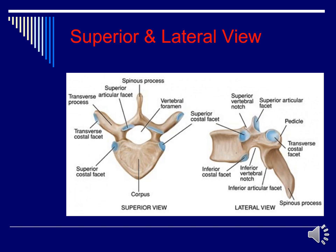This is a superior view and a lateral view of the typical thoracic spine. Note that the thoracic spine has facets and demifacets where the bony thorax or ribs articulate with the thoracic spine. The superior articular facet highlighted in blue articulates with the inferior articular facet from the vertebra above, creating the apophyseal joints. The inferior vertebral notch and superior vertebral notch from adjacent vertebrae come together to form the intervertebral foramen.